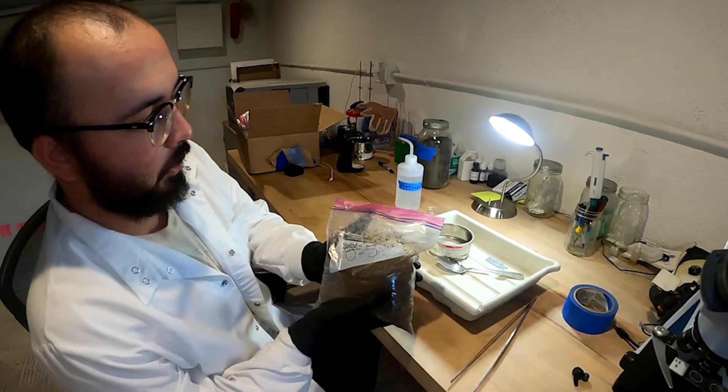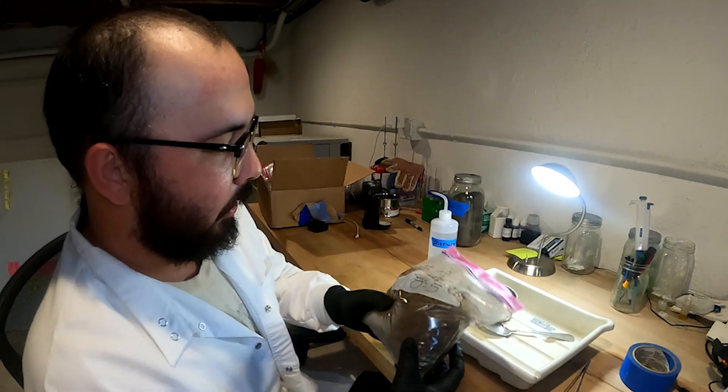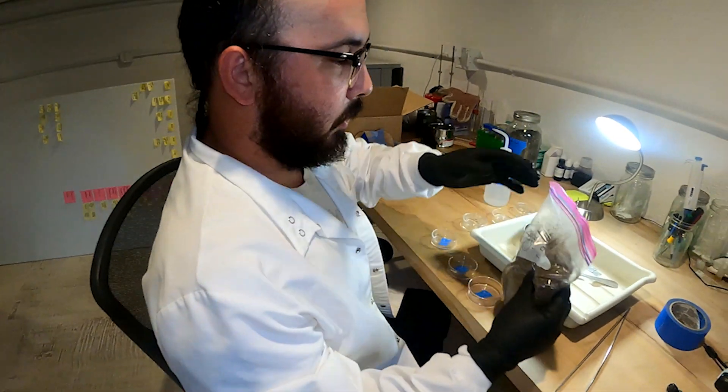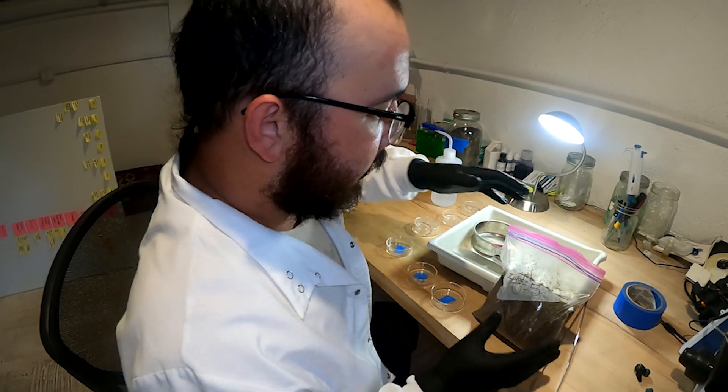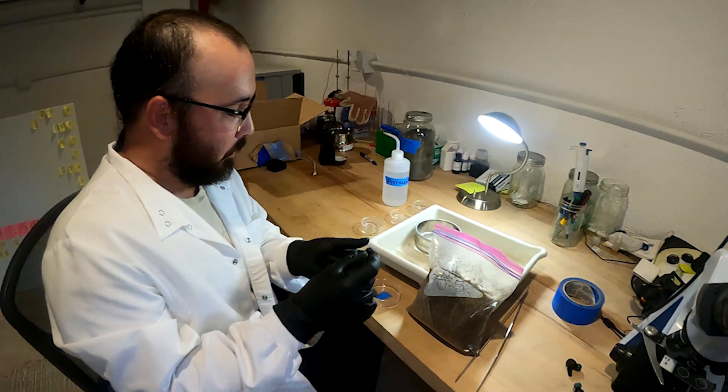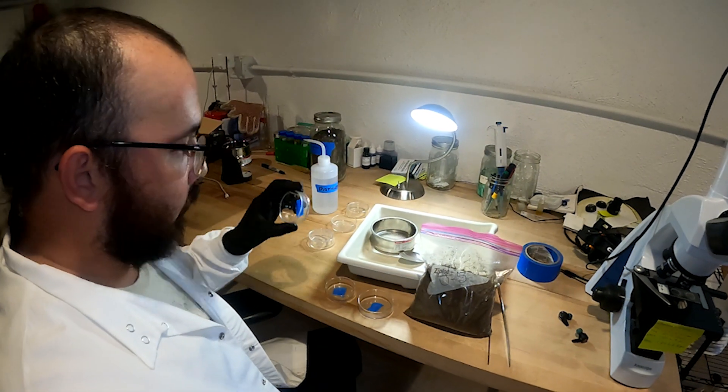What we're doing here today is the first step in staining mycorrhizal fungi. So what we're going to do is take this, sift it, just get the roots, the really fine roots, cut them into little segments, wash them a little bit.